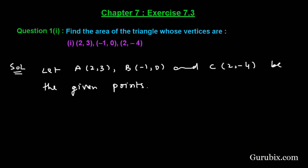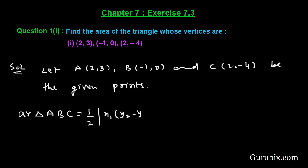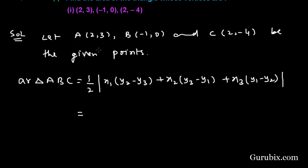Therefore, we can easily find out the area of triangle ABC by applying the formula: 1/2 times |x1(y2 - y3) + x2(y3 - y1) + x3(y1 - y2)|.